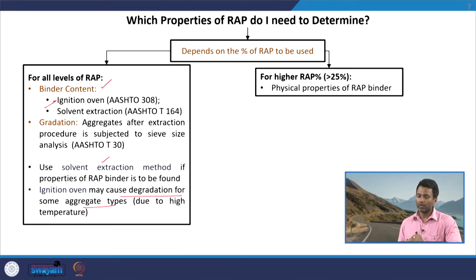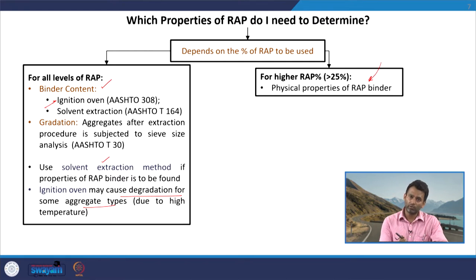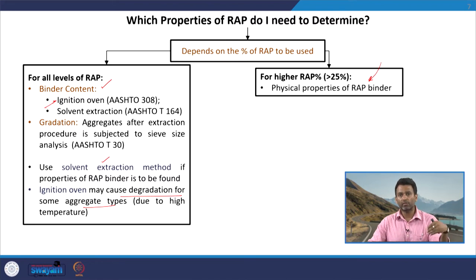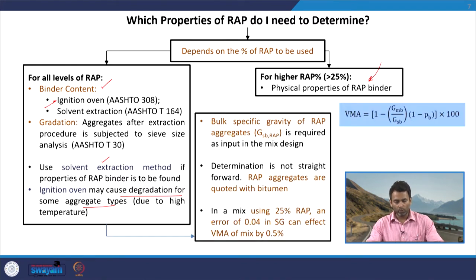For all levels of RAP, binder content and aggregate gradation are mandatory. When intending to use more than 25 percent RAP, the physical properties of the RAP binder must also be determined. This is important for using blending charts. For the aggregate properties, bulk specific gravity (GSB) of RAP aggregates is required as an input in mix design — for example, in VMA calculations where GSB is a parameter and the GSB of the mix is the harmonic mean of GSB values of different fractions.